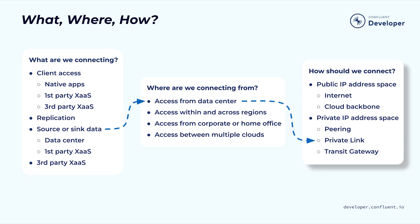Last of all, how do we want to connect to Confluent Cloud? Do we have requirements for private networking? As you can see, there are a lot of different permutations of what, where, and how. The dotted lines here show one such permutation. You may have source data in a local data center that you want to connect to Confluent Cloud, and private link is the preferred networking option after considering all factors. In the rest of this course, you'll learn how to answer the how-to-connect question given your particular scenarios.